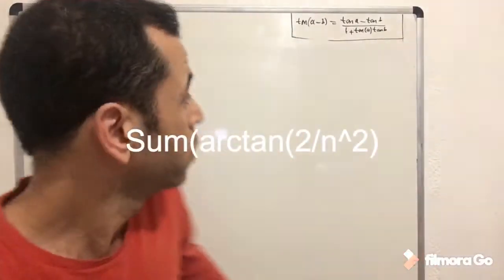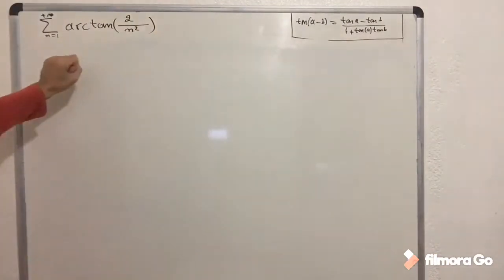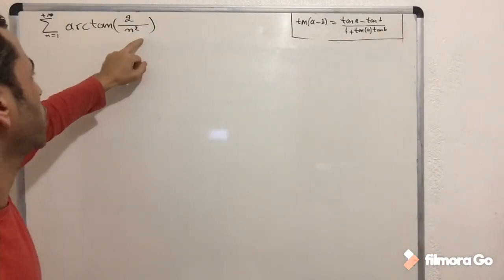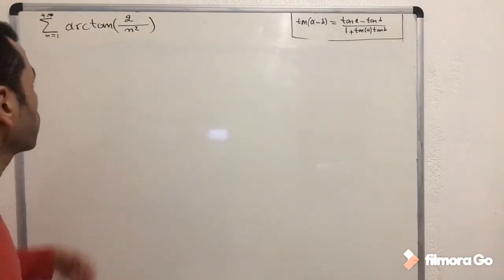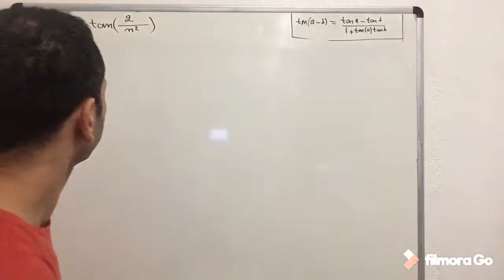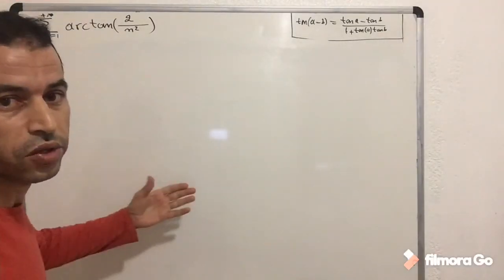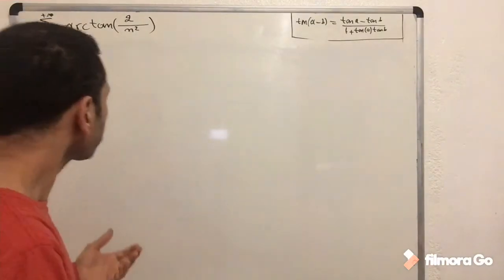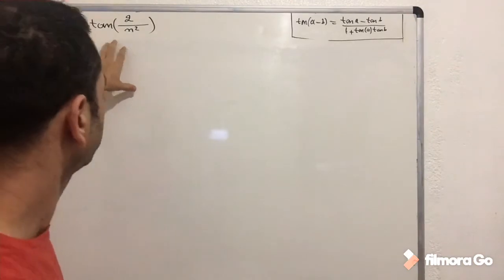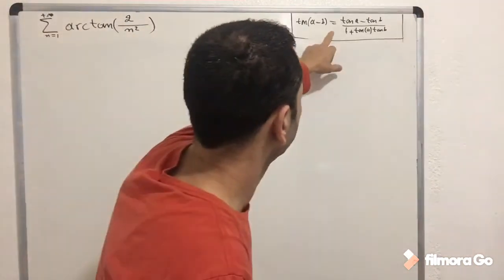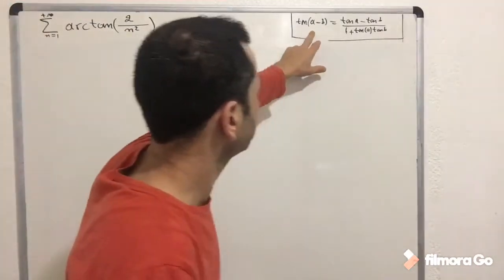In this video we are going to evaluate the sum of arctangents of 2 over n squared, from 1 to infinity. Arctangent is an inverse function of tangent. The key is the connection between this expression and the formula for tangent — specifically, the 2 over n squared expression is a form of the tangent subtraction formula.